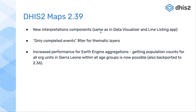You'll now see those detailed population layers coming through Google Earth Engine loading faster in the maps app. We also managed to backport that to 2.36, so if you're not using the latest version of DHIS2, as long as you're using up to 2.36, you'll still see those performance improvements.